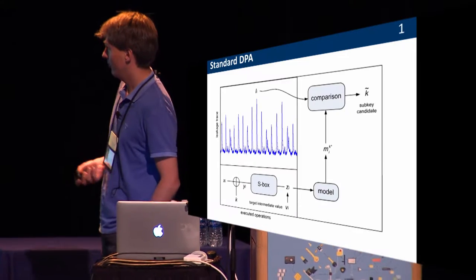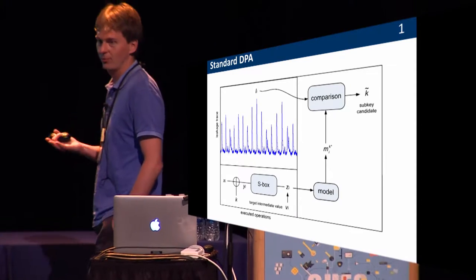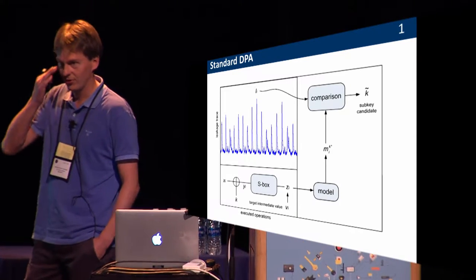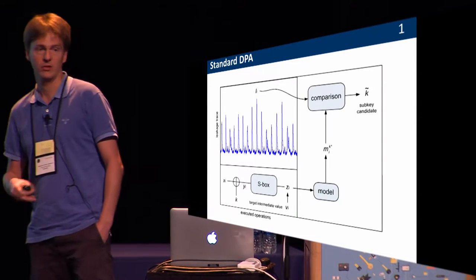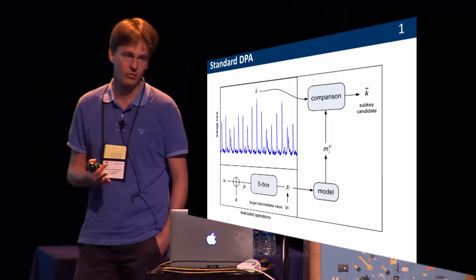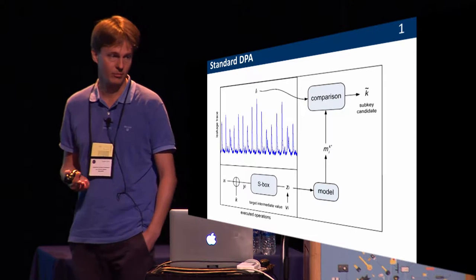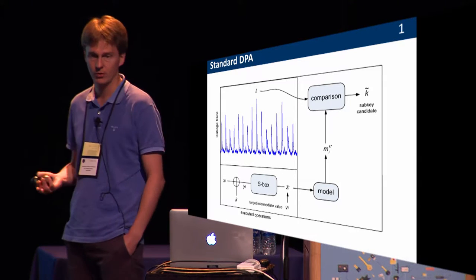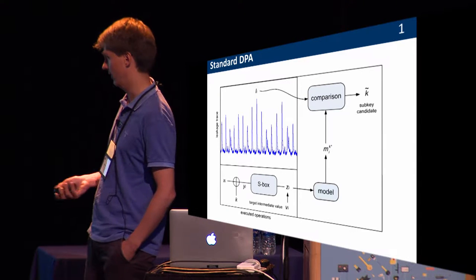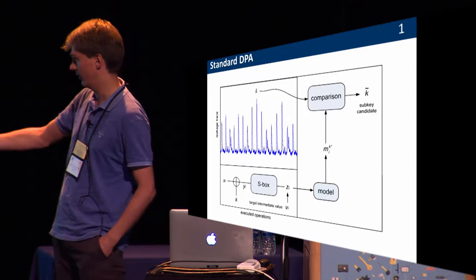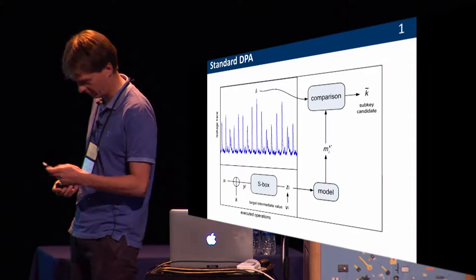So what's the story? This is a picture you more or less all know. This is standard DPA — what we do when we try to recover some information about, for example, a block cipher execution. We have an XOR at the beginning.